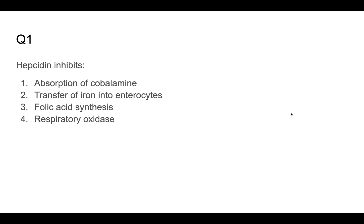The first question related to pathology in NEET PG 2020 was: hepcidin inhibits what? The choices were absorption of cobalamin, transfer of iron into enterocytes, folic acid synthesis, and respiratory oxidase. The right answer is transfer of iron into the enterocytes.